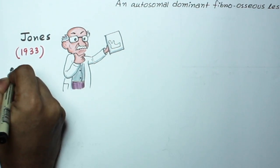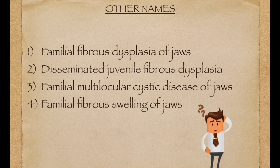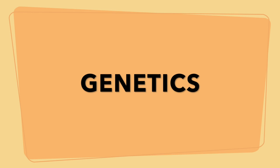The term cherubism was also coined by him. There are some other names including familial fibrous dysplasia of jaws, disseminated juvenile fibrous dysplasia, familial multilocular cystic disease of jaws, and familial fibrous swelling of jaws. But I would like to mention that the fibrous dysplasia term should be avoided because it has no relationship to fibrous dysplasia of bone.